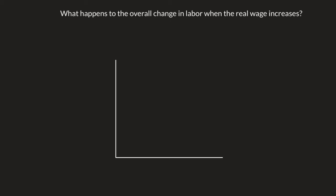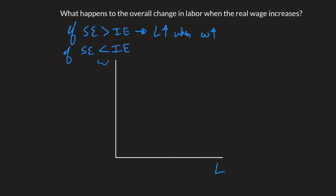We just finished talking about substitution and income effect, and how the amount of labor, which we're representing on our horizontal axis here in our supply and demand of labor model, reacts to the change in the real wage. In a previous video, you saw that this really depends: if the substitution effect is greater than the income effect, then L is going to go up when W goes up. We also saw that if the substitution effect was less than the income effect, labor would go down when the real wage increases.